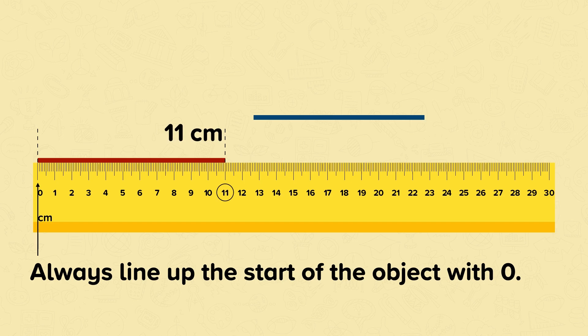The letters CM are used instead of having to write centimetres in full. They tell us what unit the line has been measured in. When measuring anything, we must always include the unit.